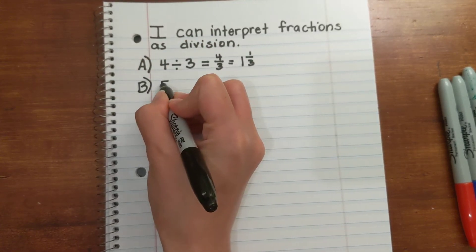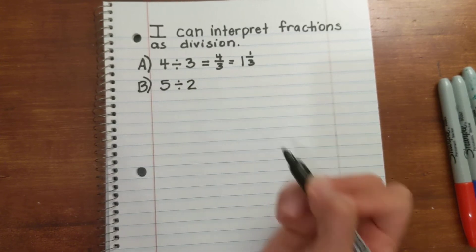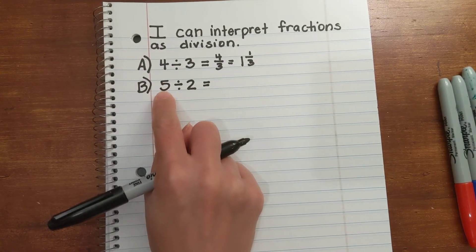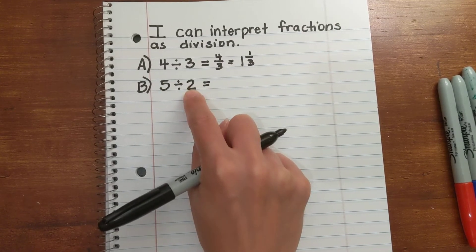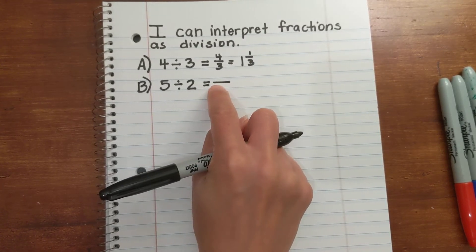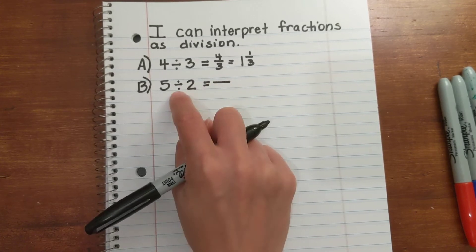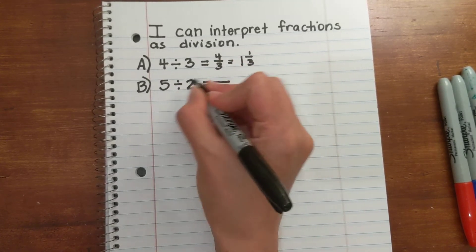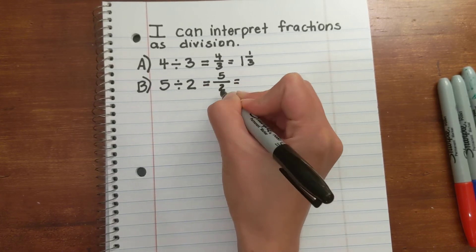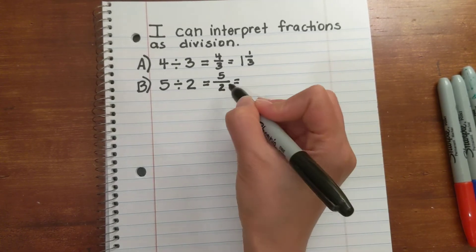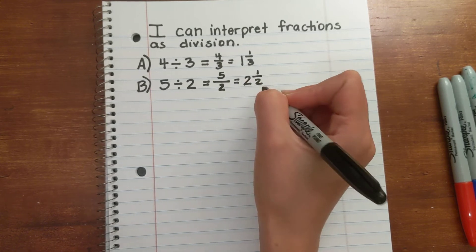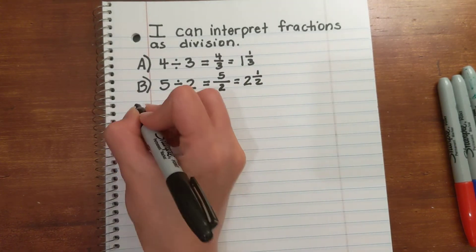Let's look at another one. Let's do 5 divided by 2. You should start to see the pattern that the 5 is going to go in the numerator spot and the 2 in the denominator spot. Because this fraction bar is actually equivalent — it's interchangeable with the division symbol. So 5 divided by 2 can also be written as 5 halves, or 5 over 2. 2 can go into 5 two times with a remainder of 1, so 5 halves equals 2 and 1 half.